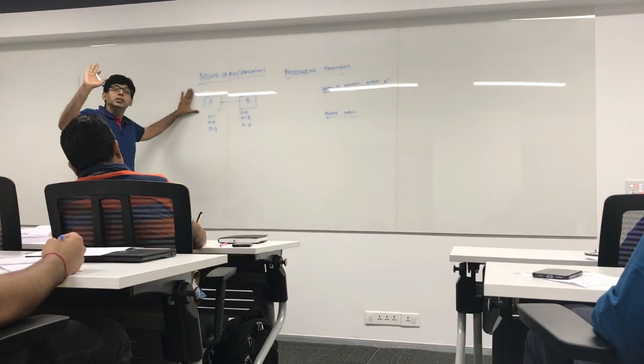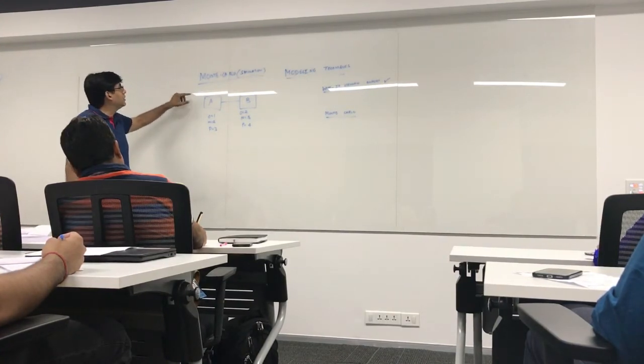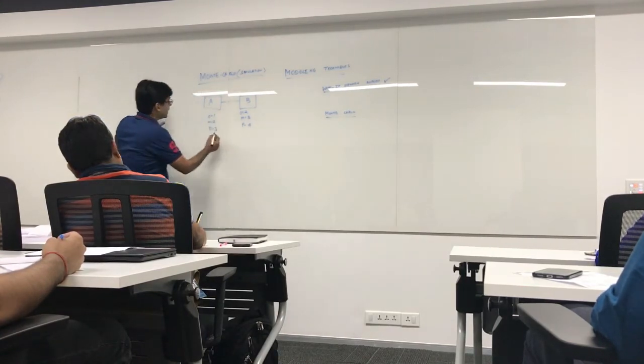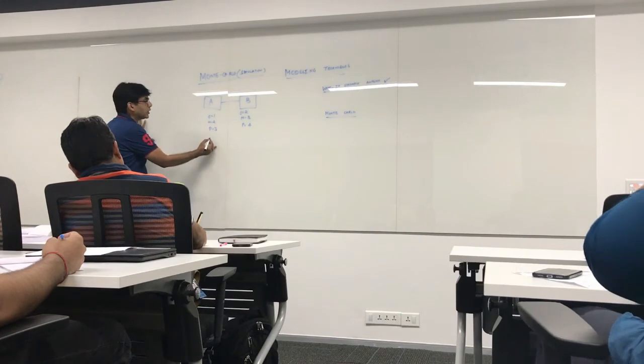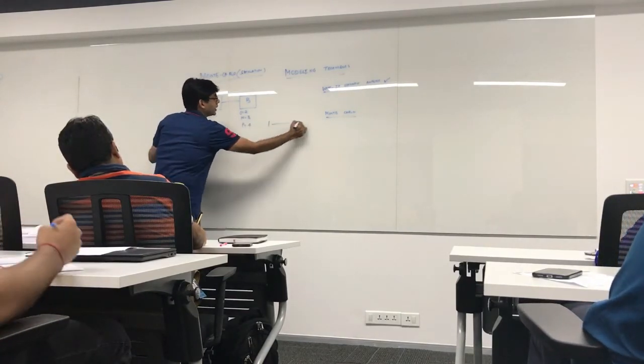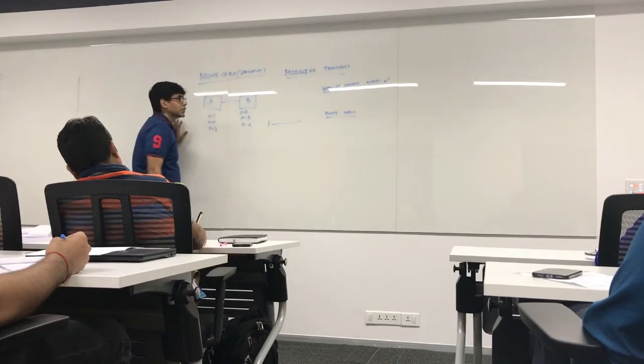Now scenario 1. Scenario 1 can be activity A getting completed in optimistic time which is 1, and activity B also getting completed in optimistic time which is 2.